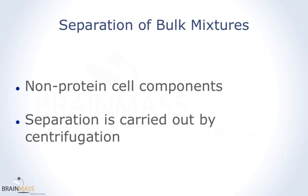Of course, there are other disruption methods that we did not go into, but once we've broken open those cells, the next step is common. We're going to have a complex mixture of proteins, lipids, DNA, and other cellular components, and we need to separate as much of the non-protein parts from the others as we can. The most common means of performing this separation is centrifugation. We simply spin the sample at a high speed so that the larger and insoluble components will form a pellet that can be separated from the protein-containing supernatant — the liquid that sits on top of the pellet. There are many more complex applications for centrifugation, but suffice it to say that separation is going to be carried out by centrifugation.